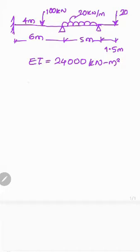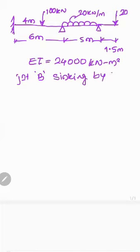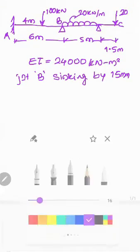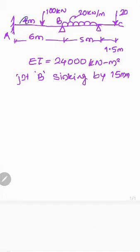It is given that joint B is sinking down by 15 mm. Joint B is sinking by 15 mm and other joints are not sinking. So joint B sinks down while others remain at the same position — this value is 15 mm.